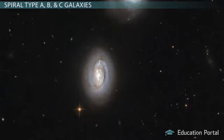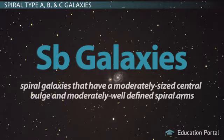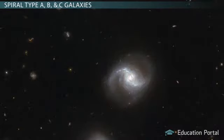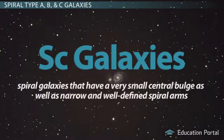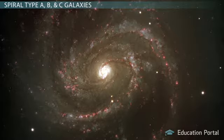Spiral type B galaxies are spiral galaxies that have a moderately sized central bulge and moderately well-defined spiral arms — the arms aren't as tightly wound as spiral type A galaxies. Spiral type C galaxies are spiral galaxies that have a very small central bulge as well as narrow and well-defined spiral arms. NGC 4321 is a type C galaxy — note how the central bulge is very small and the arms are very loosely wound in comparison to spiral type A.